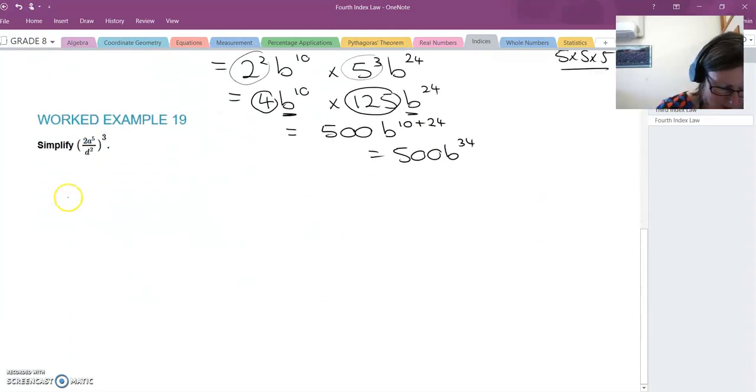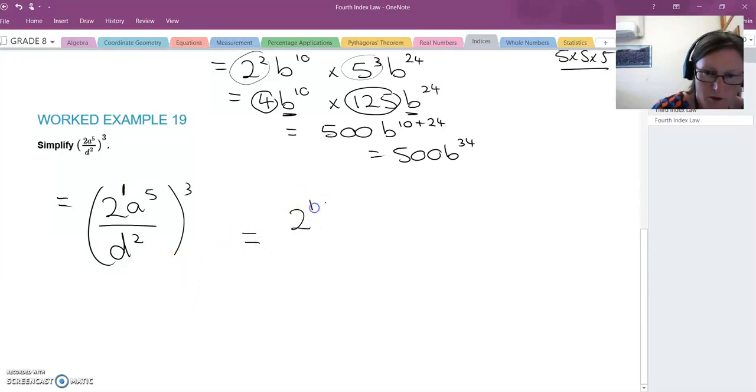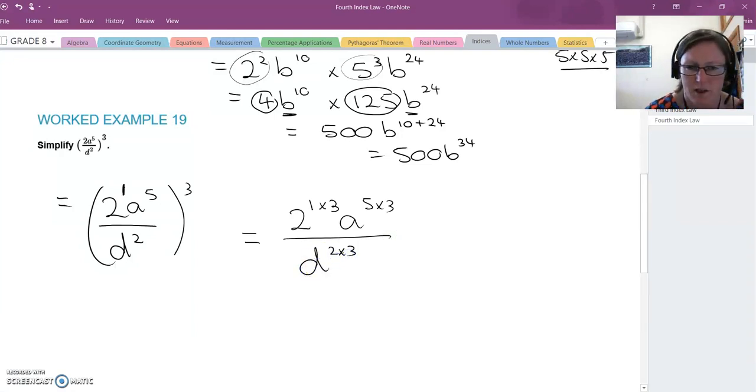Alright, one last example. So we've got 2a to the power of 5 over d squared, all cubed. Put your one in there. Then I don't think you'll forget to go 2 to the 1 times 3, a to the 5 times 3, and on the bottom, d to the 2 times 3. So everything in those brackets is getting raised to the power of 3. So we've got 2 to the 3, a to the 15, d to the 6.